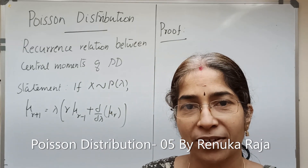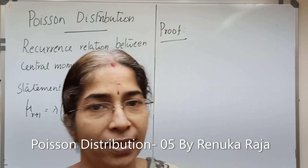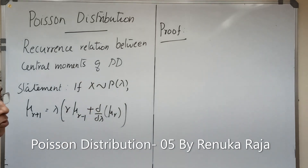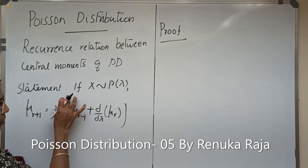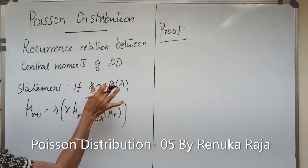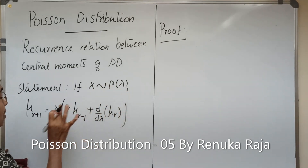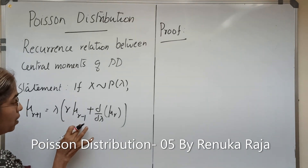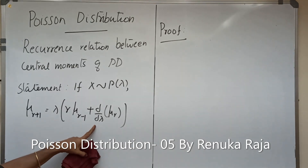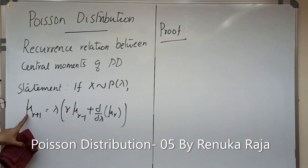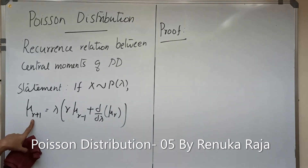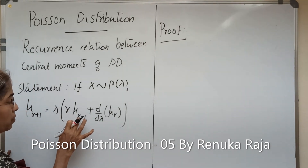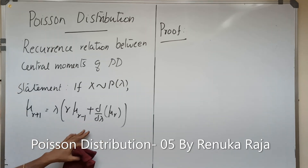We are discussing Poisson distribution. Today we learn the recurrence relation between the central moments of Poisson distribution. The statement is: if X follows Poisson distribution with parameter λ, then μ_{r+1} = λ(r·μ_{r-1} + d/dλ·μ_r). That is, the (r+1)-th central moment equals λ times r·μ_{r-1} plus the derivative of μ_r with respect to λ.